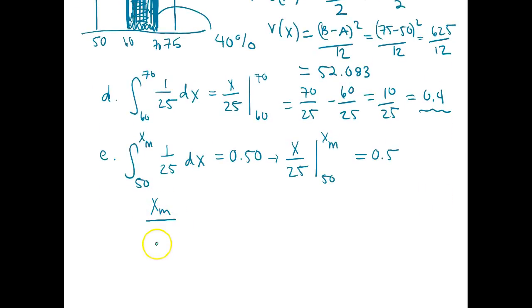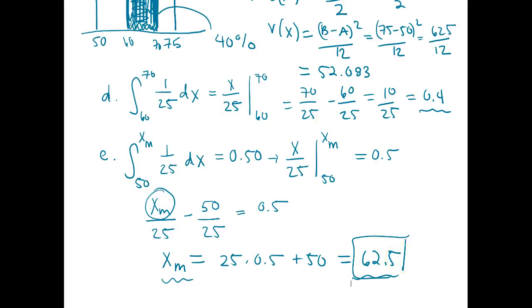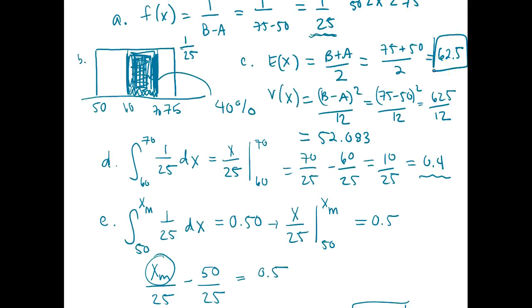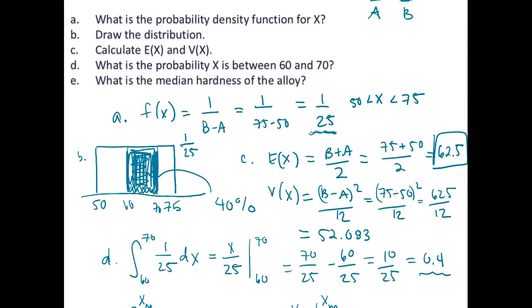So this is equal to xm, that's what we're trying to find, our median value over 25 minus 50/25 equal to 0.5. So now we just solve for our median value, and this is equal to 25 times 0.5 plus 50, which is equal to 62.5. So our median is actually the exact same value as our mean or expectation, and that is something we should expect from a symmetric distribution like the uniform distribution. So that is how we can calculate the expectation, variance, probabilities, and median of a uniform random variable.